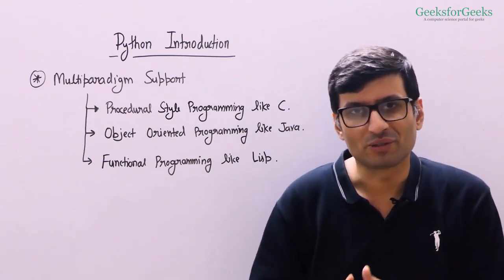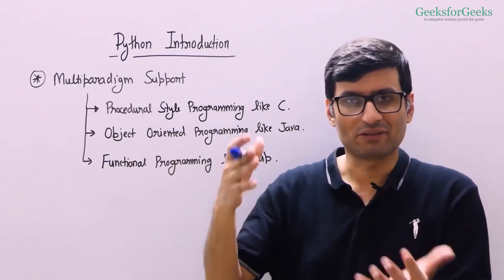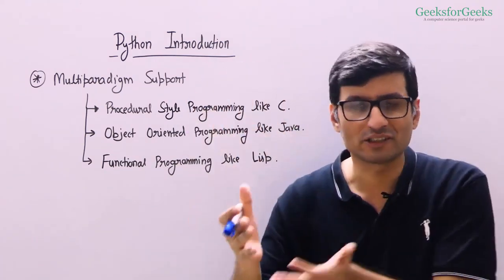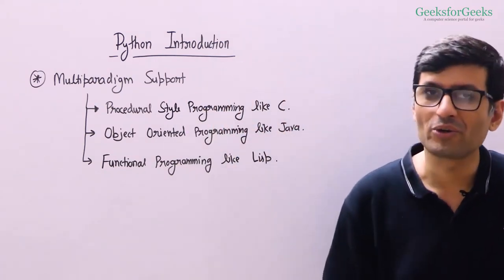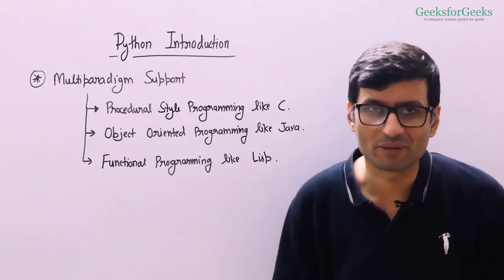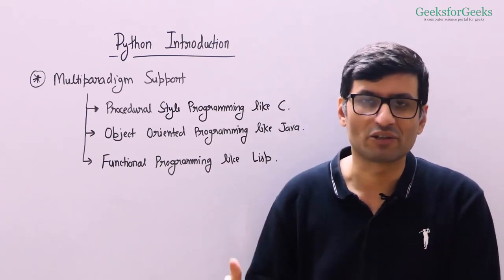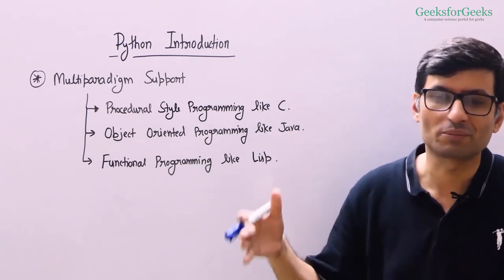You can design software like you design in C where you have a function that calls other functions and they call other functions and you get your things done. Or you can design in object-oriented programming way like you design in Java where you have multiple classes and objects of these classes and these objects interact with each other.